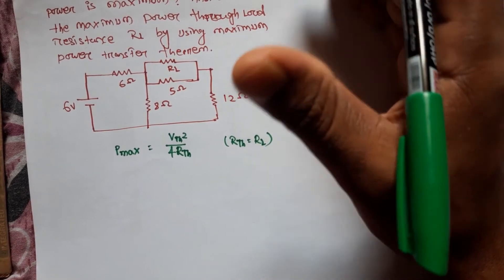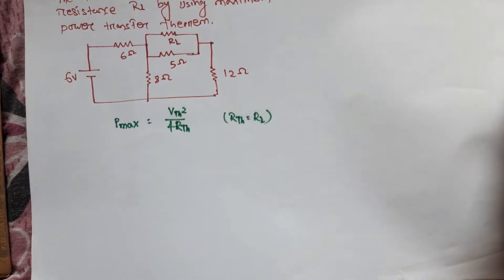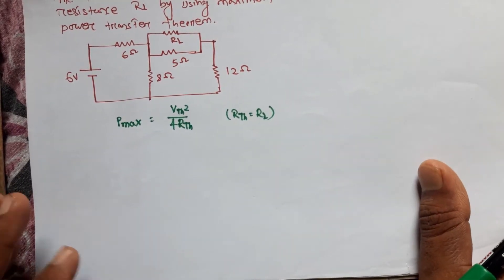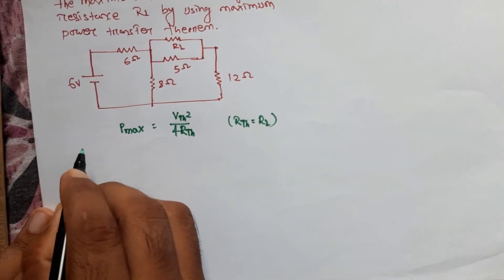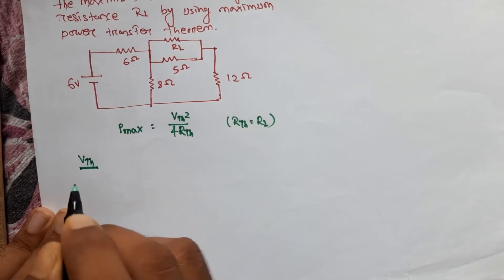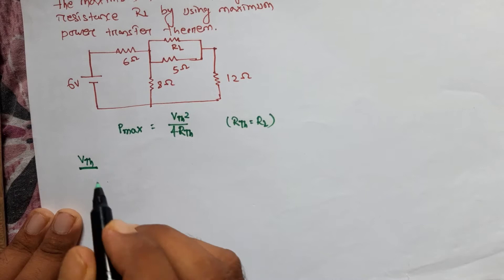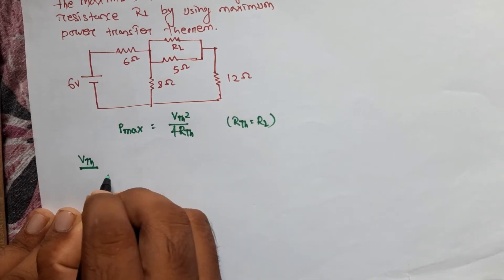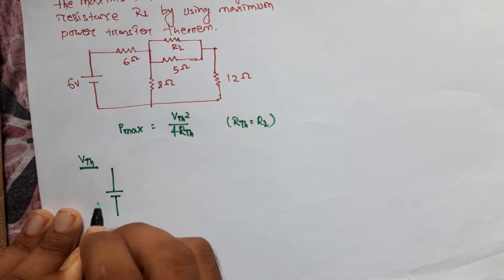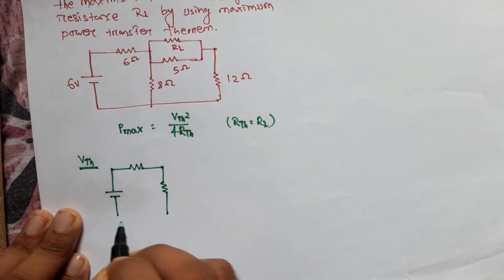We already know how to find the Thevenin equivalent circuit — both the resistance and the voltage. To find Vth, the procedure is to open-circuit the load resistance.